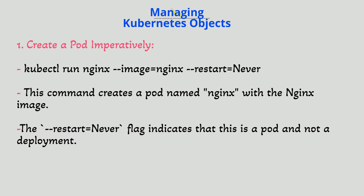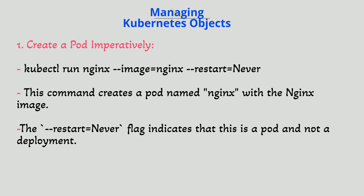1. Create a pod imperatively. `kubectl run nginx --image=nginx --restart=Never`. This command creates a pod named nginx with the nginx image. The --restart=Never flag indicates that this is a pod and not a deployment.